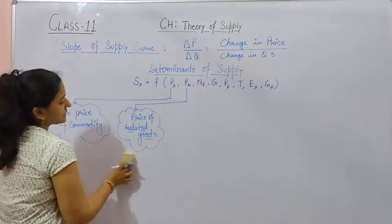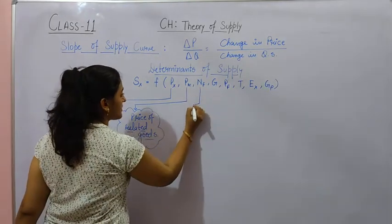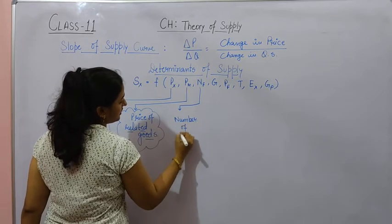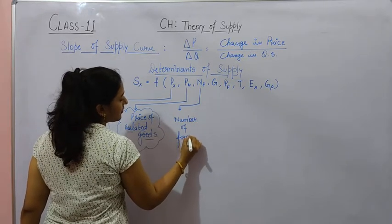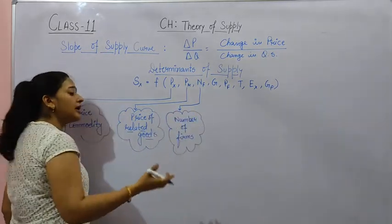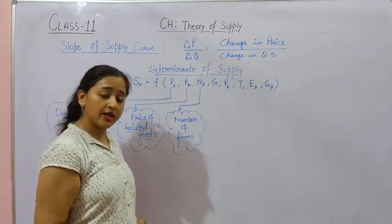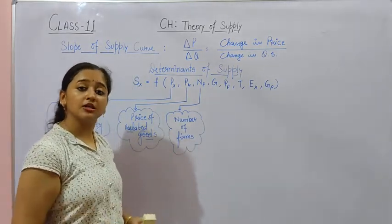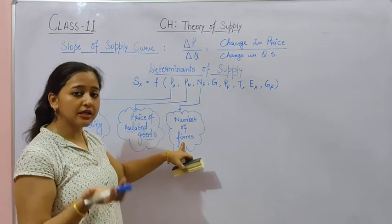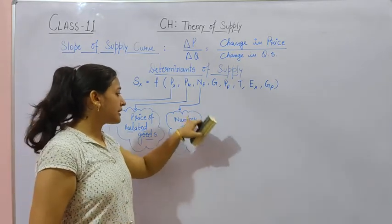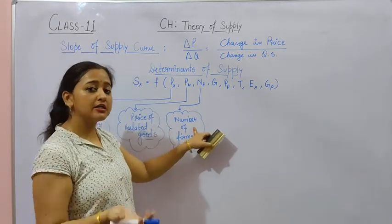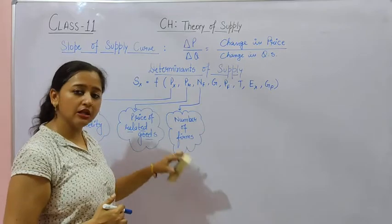Next is NF, which means number of firms. If the number of firms or producers is more, production will be more, and our supply will also increase. So, if there is an increase in the number of firms, then supply will also increase. And if there is a lesser number of firms, then supply will decrease.